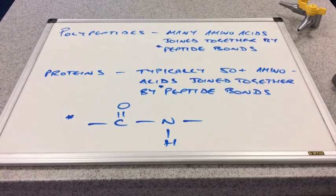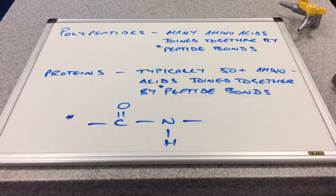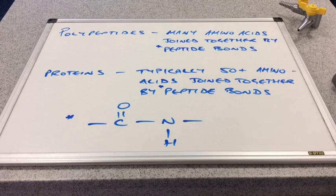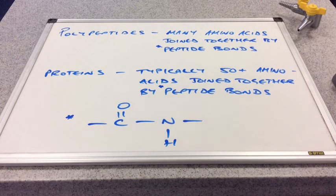And we'll just finish with this. There's a couple of words I'm sure you're familiar with. Polypeptides, they're just molecules that have been formed by many amino acids joined together by peptide bonds through condensation reactions. And proteins are typically 50 plus amino acids joined together by those peptide bonds. And just a reminder there, that this is how we draw out the peptide bond.